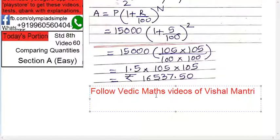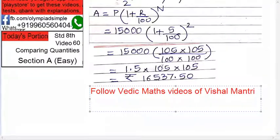Follow Vedic Maths videos of mine on this channel only. That becomes so simple that you can count it on only your fingers. It's so easy. So you multiply this and you will get 16,537.5.